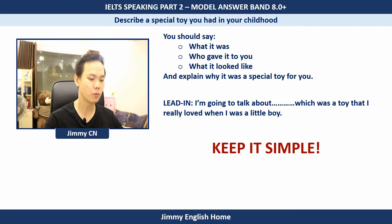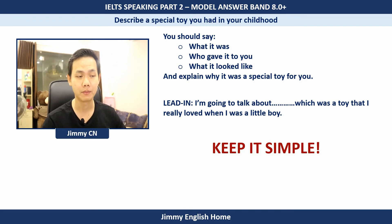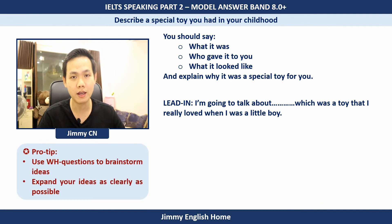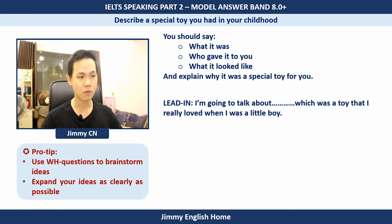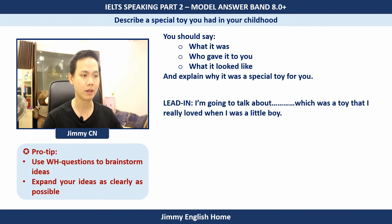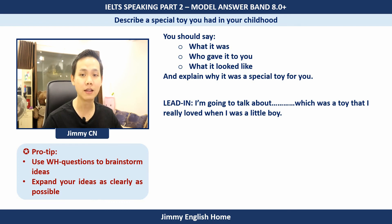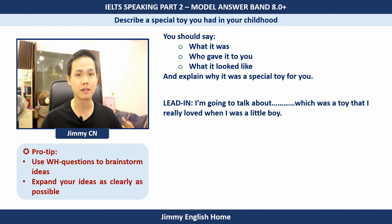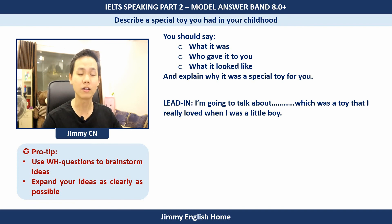Now, one thing many learners struggle with in IELTS Speaking Part 2 is how to generate ideas. A tip I want to share is to use WH questions. WH questions are information-gathering questions like: what, who, when, why, and how. List out all those questions and match them against your topic to find which ones are relevant. Then develop your ideas as specifically and in as much detail as possible. After generating ideas with WH questions, filter and arrange them in a logical order. That's a useful strategy for finding more ideas for Part 2.